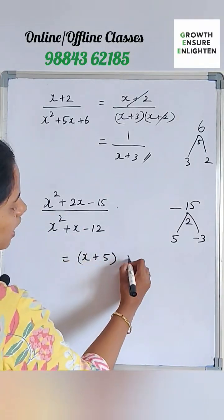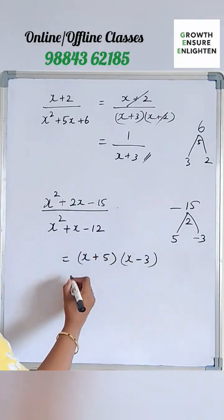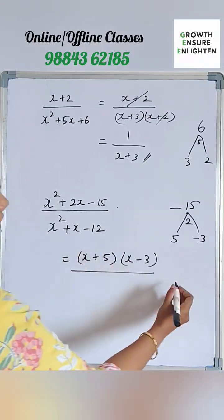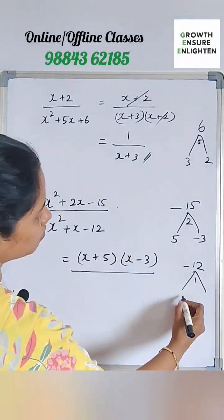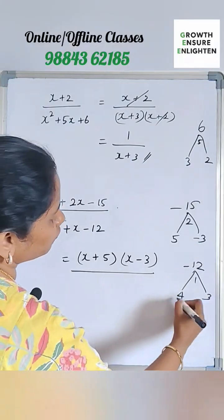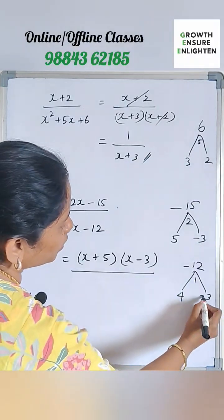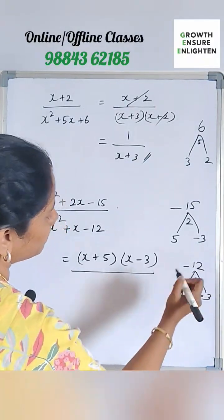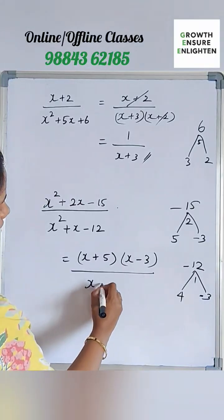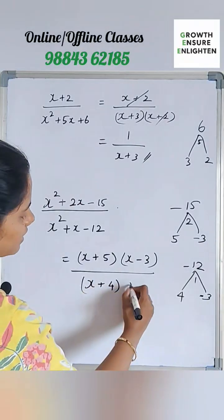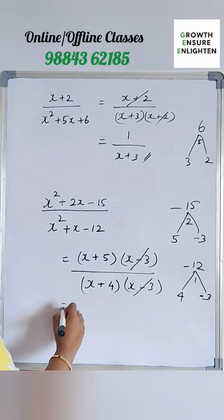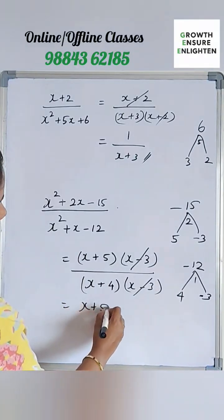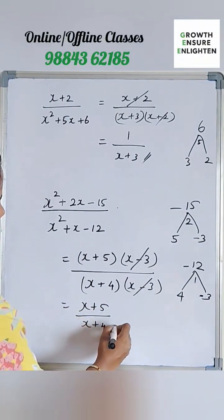Check the denominator. The factors are, let's check minus 12 and the middle term is one. What are the numbers? I think it is four, three. Four times three is 12. If I'm putting minus here, then four minus three would be plus one. So the factors are x plus four and x minus three. We can cancel this x minus three together. So the answer is x plus five and x plus four. That's it.